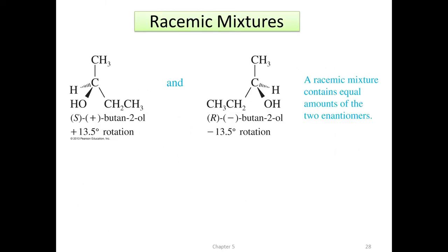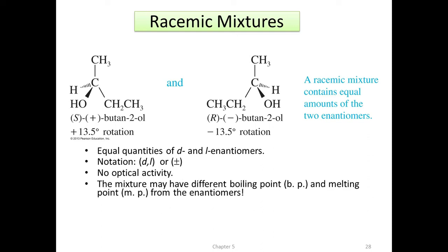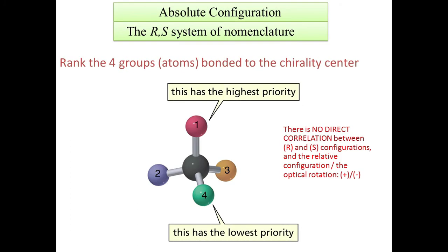A racemic mixture contains equal amounts of two enantiomers — equal quantities of d and l enantiomers. The rotations cancel out, so there is no net optical activity. A racemic mixture has different boiling points and melting points from the individual enantiomers. Absolute configuration is described by the R/S system, where R means 'rectus' (right) and S means 'sinister' (left).